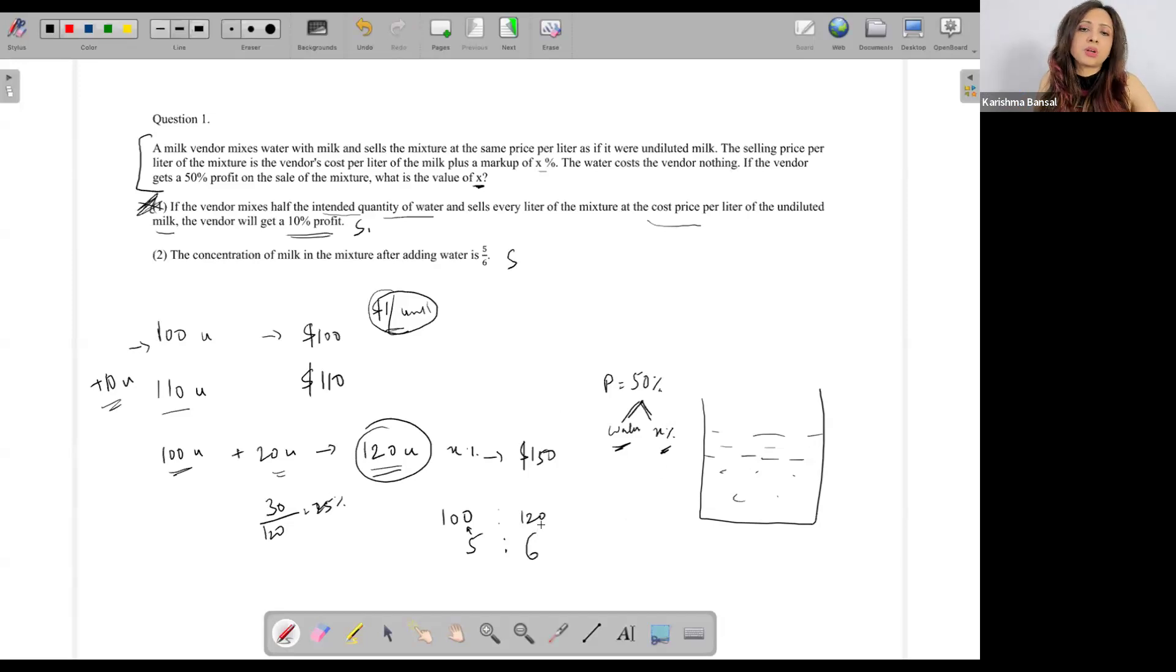In any case, I've got 120, that means it's a markup of 30. 30 upon 120 gives me a markup of 25 percent. So I know that this is sufficient. Then both of these are sufficient alone. People end up making equations in this question usually.